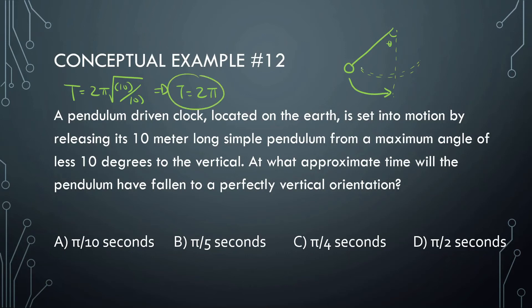But remember, what that means is that's how long it takes to go from here to the equilibrium, all the way to the other side, back to the equilibrium, back to where it started. So that's how long it takes, 2π seconds to go to make a full cycle. We just want to know how long it takes to go to this point right here, which is one-fourth of the period. So we can do 2π, divide that by 4, and that's going to be π over 2 seconds.